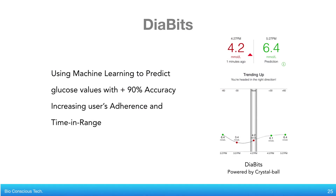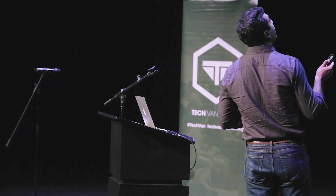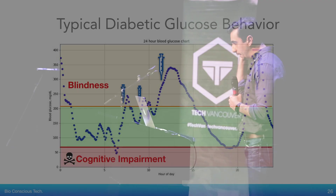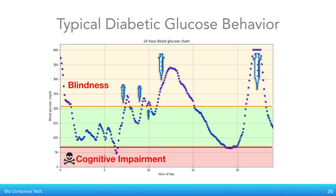This is what it looks like. It shows you how you were doing 60 minutes ago, 30 minutes ago, right now, 30 minutes from now, 60 minutes from now — right now and then an hour from now. I was super excited about it. We knew it worked. So we released it on the App Store. And what we found out was this is a typical glucose behavior for a patient with diabetes. This is how it looks like.